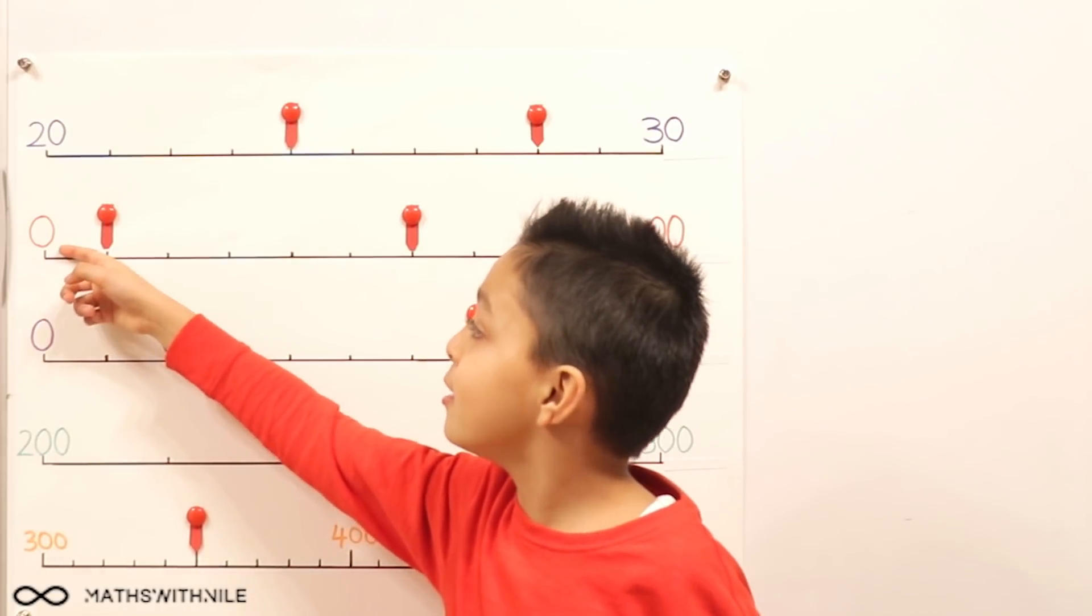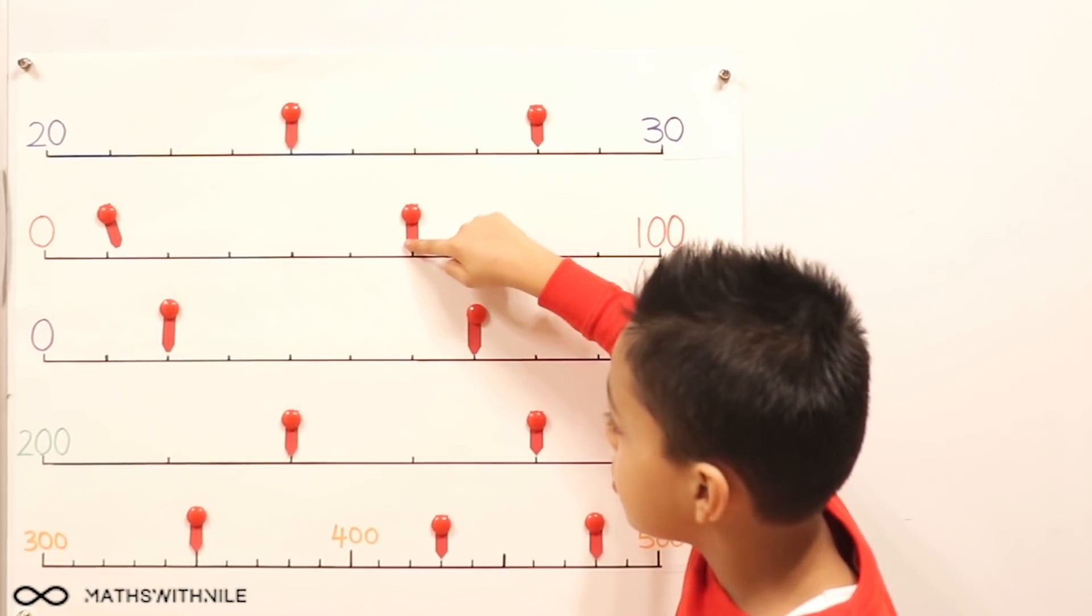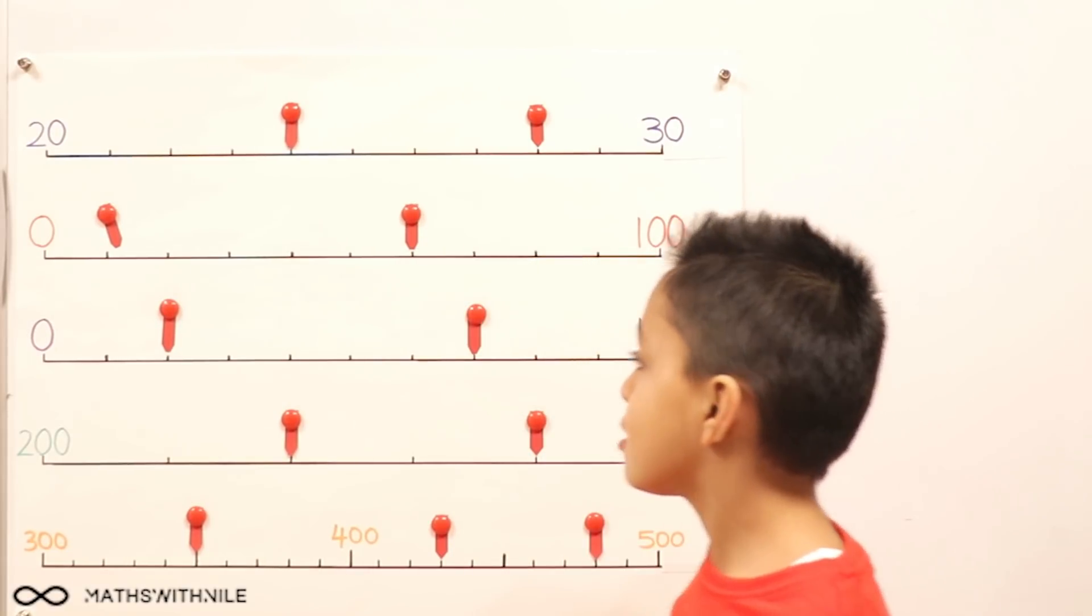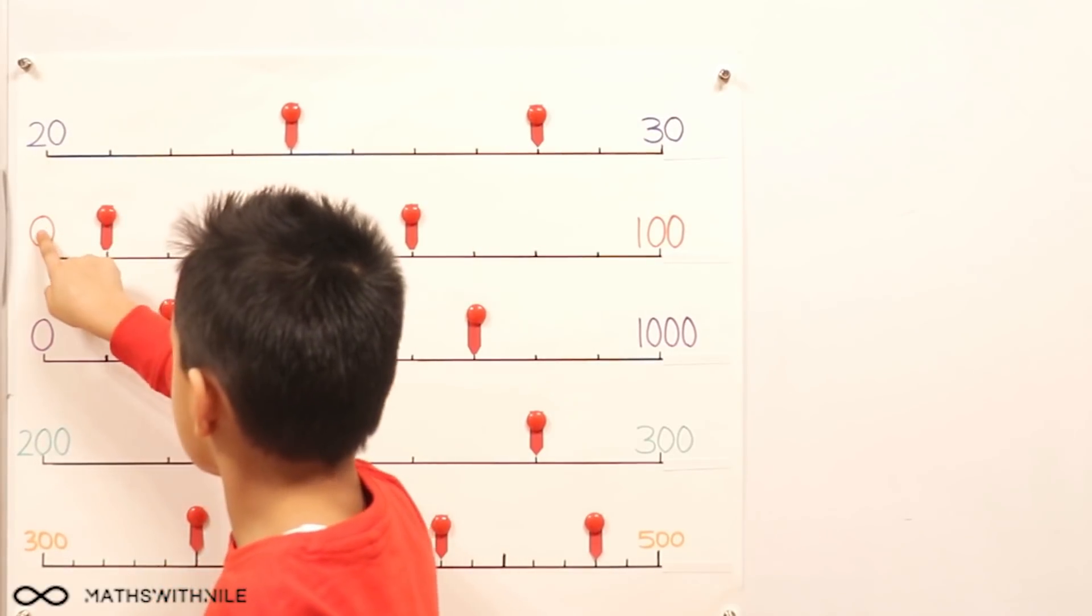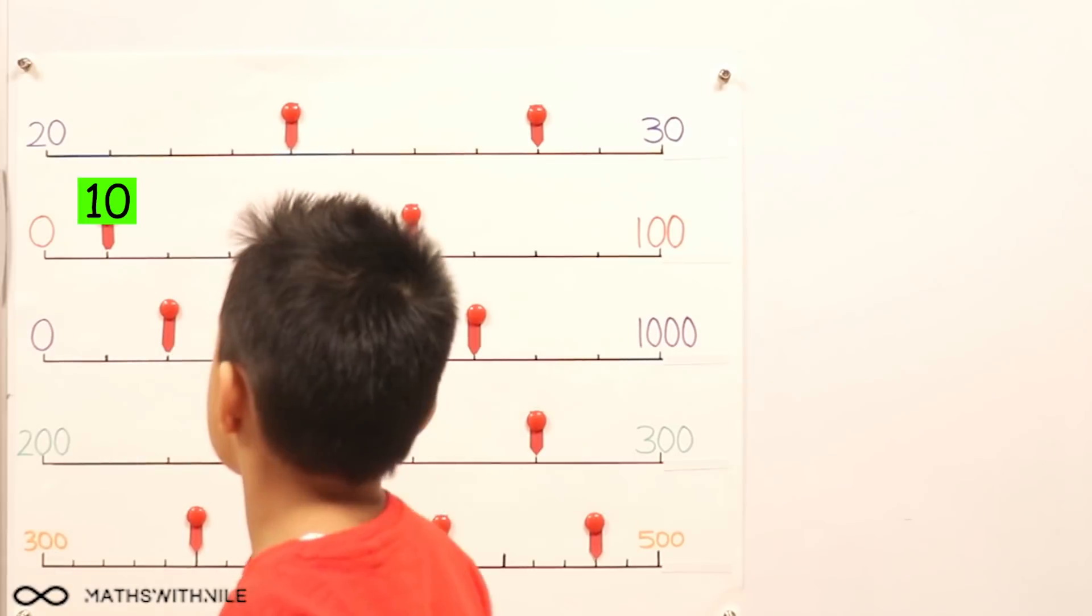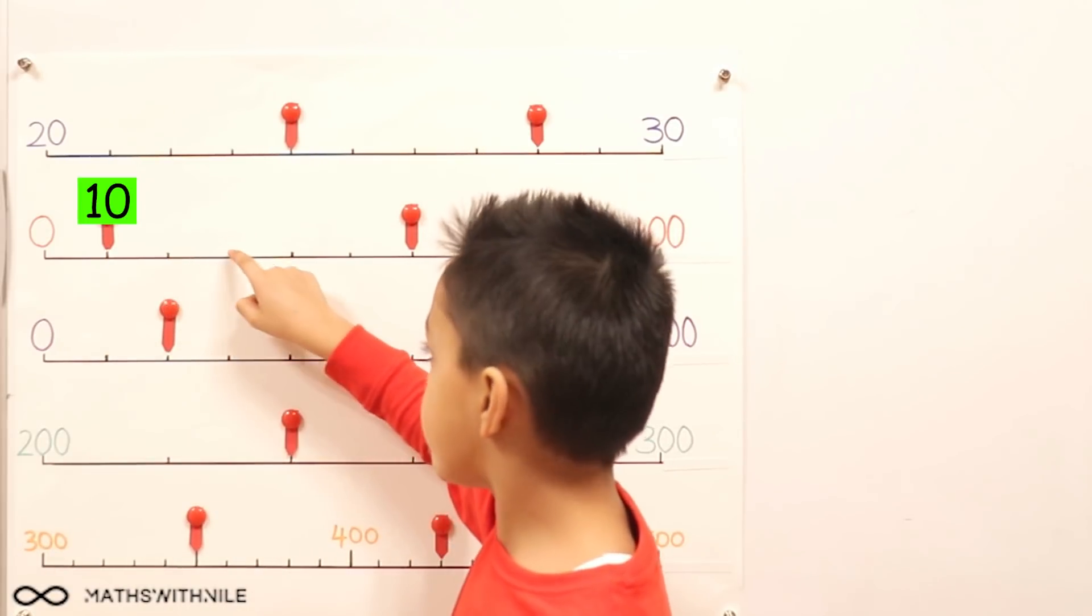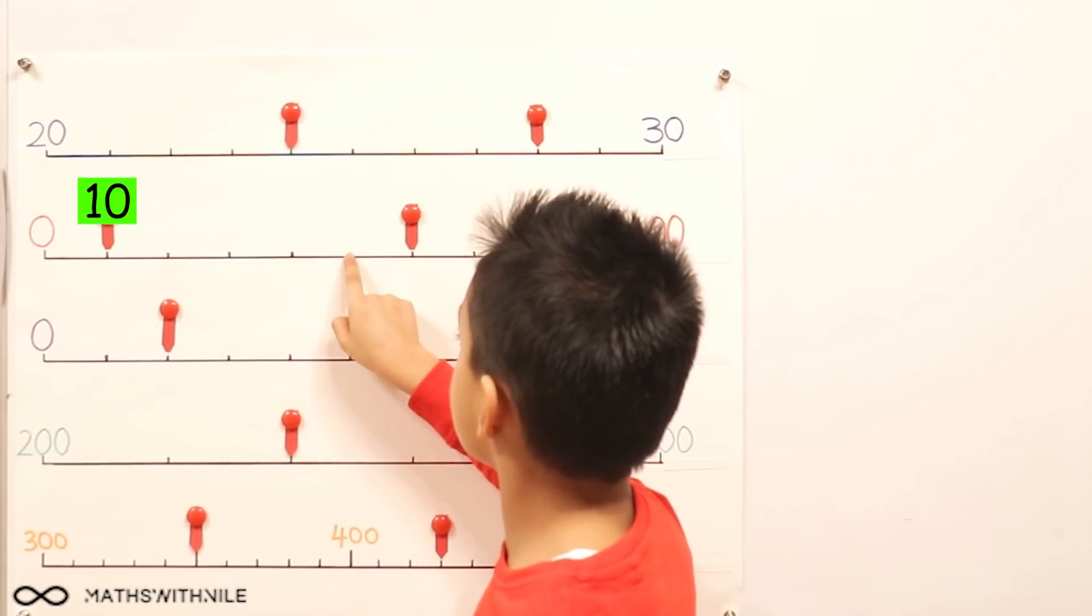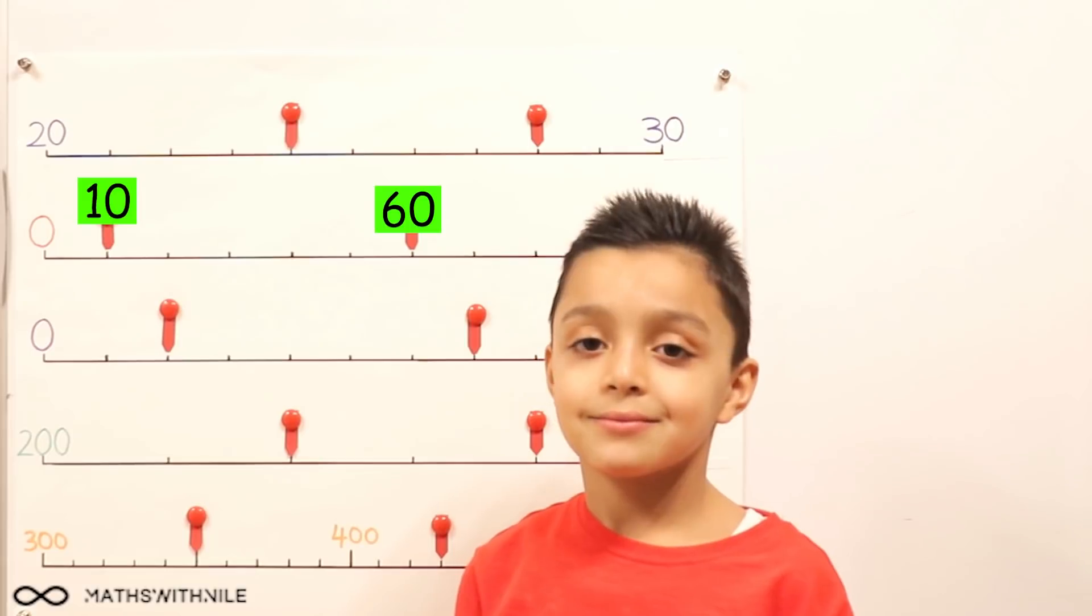Now we need to figure out where these knobs are pointing to, the arrows. So start at the next arrow and tell us. Zero, 10. Okay, which is quite easy. 10, 20, 30, 40, 50, 60. Excellent, well done Niall.